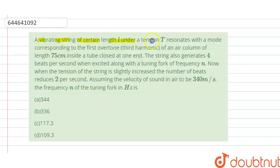A vibrating string of length l under a tension T resonates with a mode corresponding to first overtone (third harmonic) of an air column of length 75 centimeter inside a tube closed at one end.